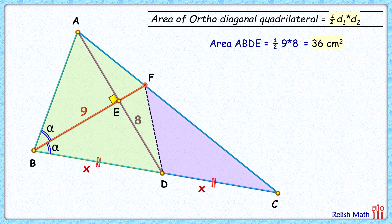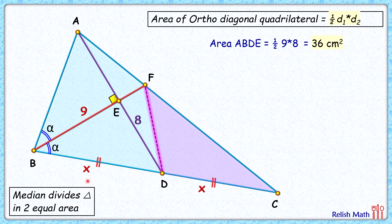Now for the area of this pink triangle, if you concentrate on FD, D is the midpoint of BC, so FD is the median for triangle FBC. We know the median divides a triangle into equal areas, so the area of this yellow triangle and this pink triangle are equal.